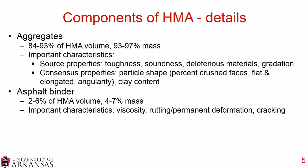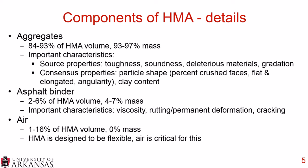Asphalt binder takes about 2% to 6% of the hot mix asphalt volume, or about 4% to 7% of the mass. Important characteristics include viscosity, rutting and permanent deformation, and cracking. Air can take anywhere from 1% to 16% of the HMA volume. And always a popular quiz question: what is the mass of air? It's zero, regardless of how much there is. The HMA is designed to be flexible, and the air is absolutely critical for this flexible behavior.